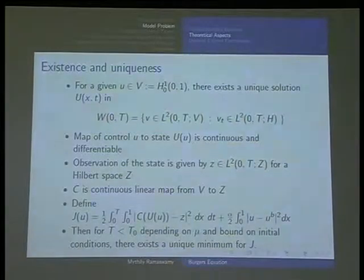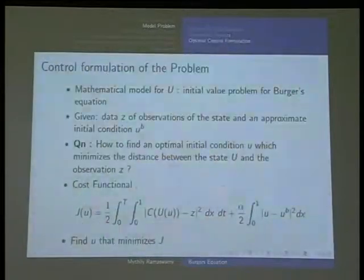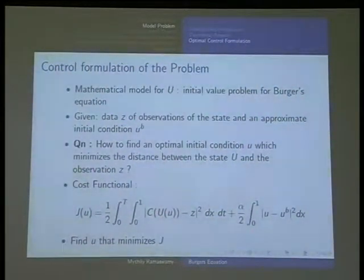We were looking for theoretical results - when is there a unique minimum and can we estimate for which time? There was one paper by Andrew White. There exists a t depending on mu and the bound on the initial conditions and coefficients, where there exists a unique minimum for J, and hence numerically we should be able to get the unique minimum.